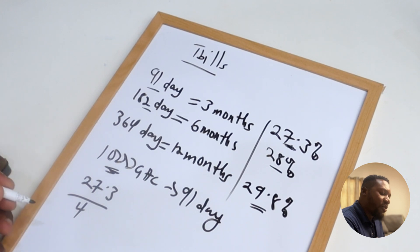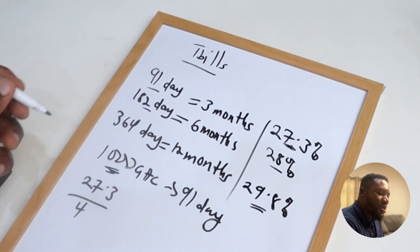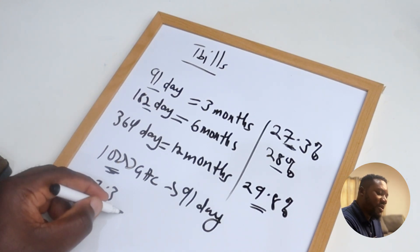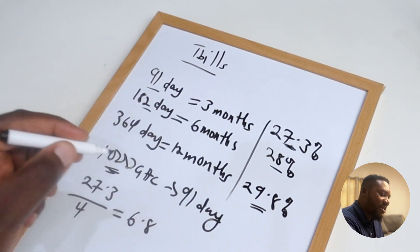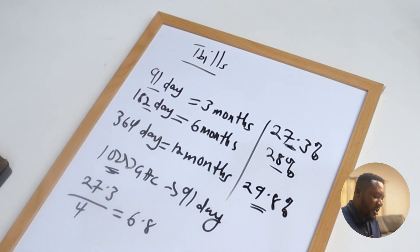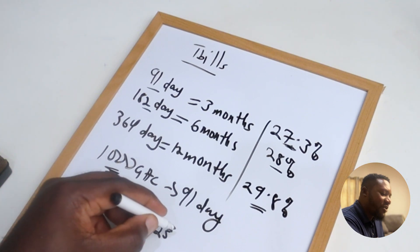What you are going to get is 27.3 divided by 4, which is 27.3 divided by 4. Now whatever this is is going to be your return. So this divided by 4 is going to give you something like 6.8 something.